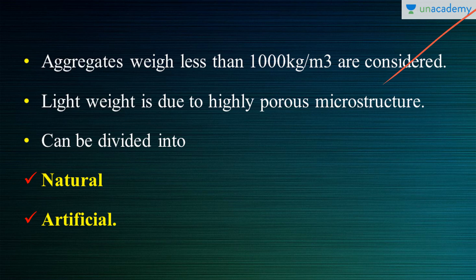Since these aggregates are lighter in density, they are considered for lightweight concrete. This lightweight property is mainly due to their highly porous microstructure. However, some natural aggregates like wood chips cannot be used because of a lack of durability — they are also not durable in the alkaline environment of Portland cement. Because of these limitations, some natural aggregates don't qualify as lightweight aggregates for concrete. Lightweight aggregates can be divided into natural and artificial.